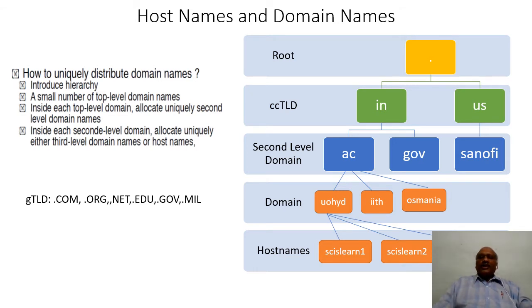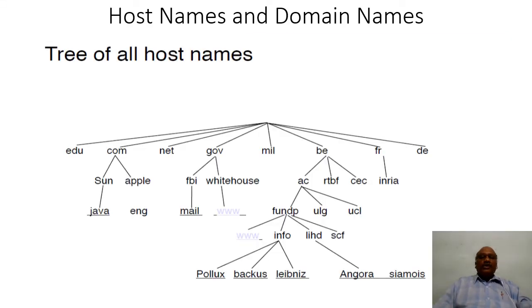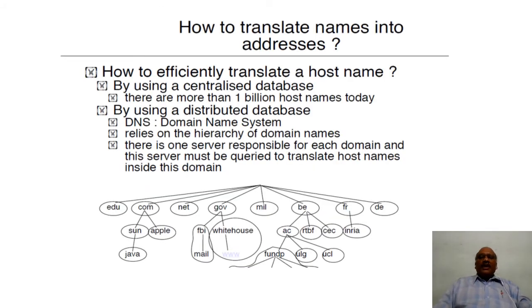The country code top-level domains and general top-level domains include .com, .org, .net, .edu, .gov, and .mil — these were the initial set of top-level domains introduced during the time of ARPANET. The tree of host names starts with a dot, followed by different top-level domains — both general and country-code — and under each top-level domain we have second-level domains, followed by the corresponding domain names and their host names.